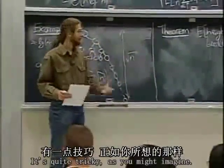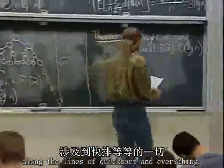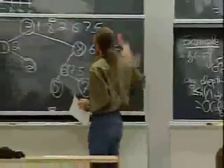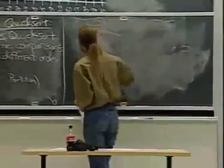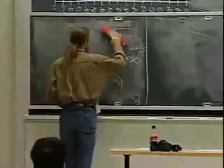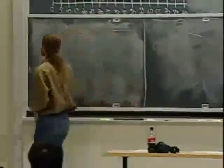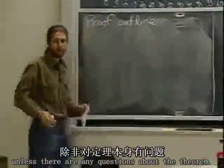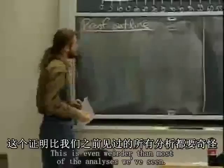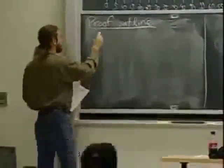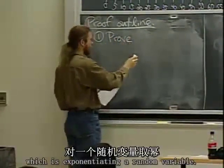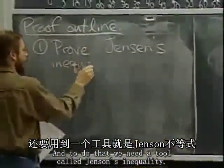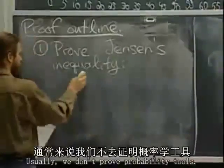I'm going to start with an outline of the proof. This is even weirder than most of the analyses we've seen. It's going to use a fancy trick: exponentiating a random variable. To do that, we need a tool called Jensen's inequality, which we're going to prove. It involves some basic analysis.